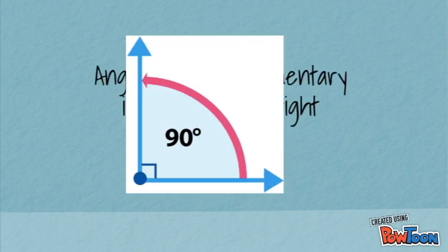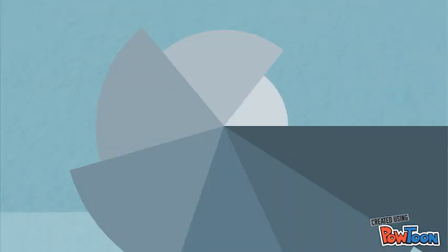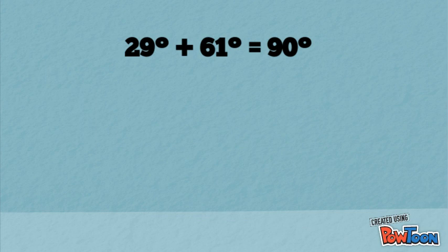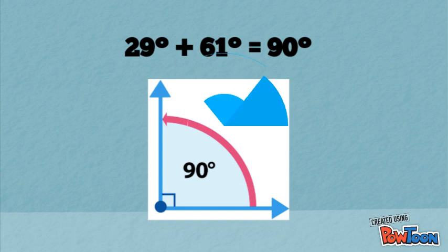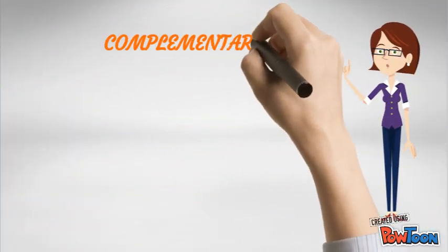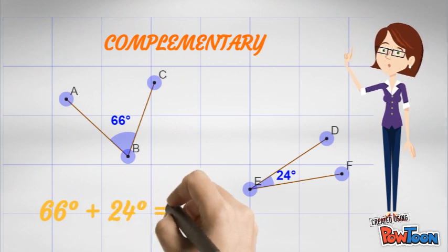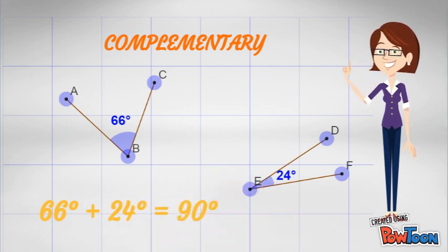Notice that the angles are complementary if they form a right angle. For example, 29 degrees plus 61 degrees equals 90 degrees. Therefore, these two angles form a right angle. Next example: 66 degrees plus 24 degrees equals 90 degrees. So these two angles are complementary.